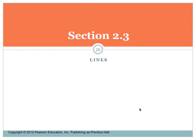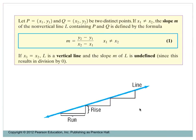In section 2.3 we talk about lines, starting with slope. Given two distinct points P = (x₁, y₁) and Q = (x₂, y₂) where x₁ ≠ x₂, the slope M of the non-vertical line through them is defined as (y₂ - y₁)/(x₂ - x₁). If x₁ = x₂, you have a vertical line and the slope is undefined — you'd be dividing by zero, which is not allowed.